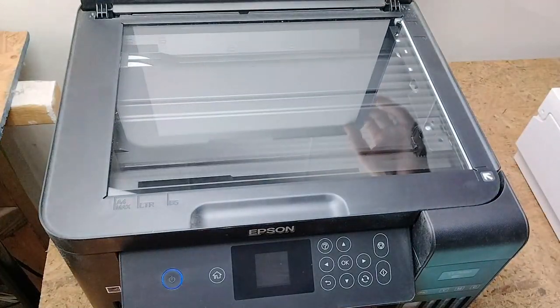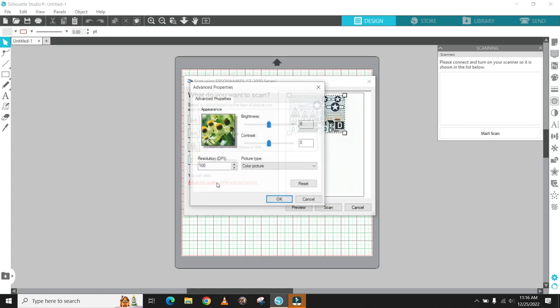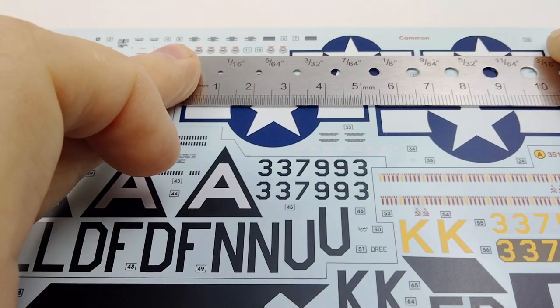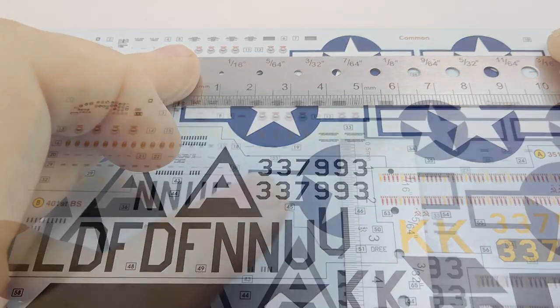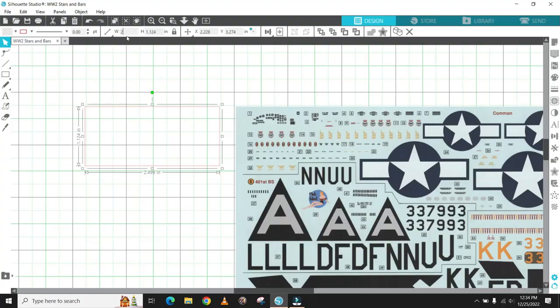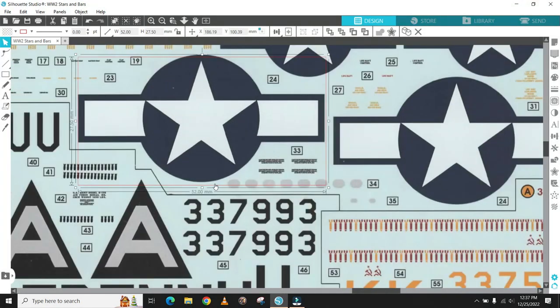Using a standard printer scanner, I set the scanner to the highest DPI in full color and scan in the decal sheet. To begin, I take measurements of the actual decals I wish to replace with masks and make sure to resize the image to match my measurements. I do this by drawing a rectangle to the measurements and then checking and resizing the scan to match.